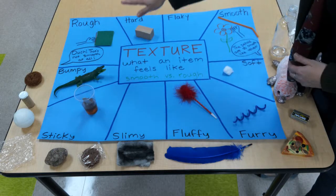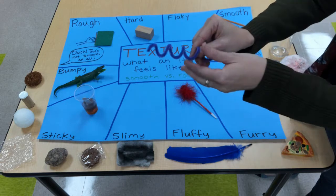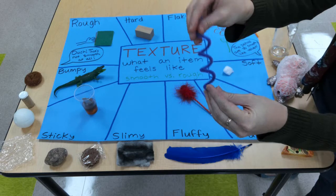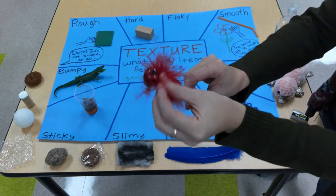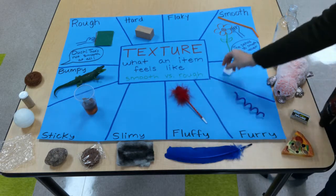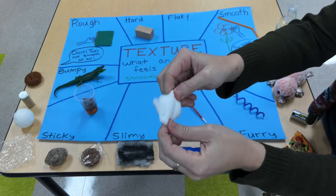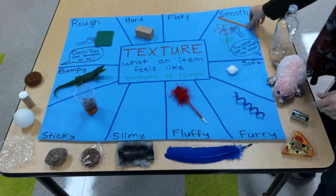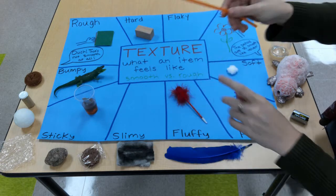These are all the different types of textures we're going to be talking about. Fluffy, like the feathery end of my pen. Soft, like this cotton ball — super soft. A lot of our blankets and clothes are made out of cotton. Or even smooth, like this straw right here — really smooth if I run my finger over it.